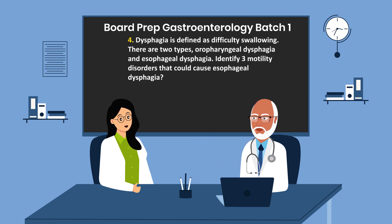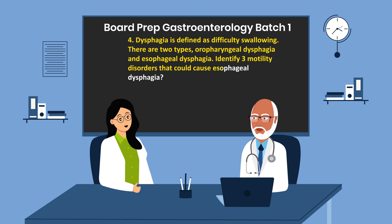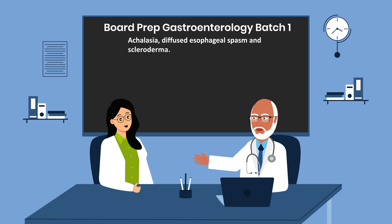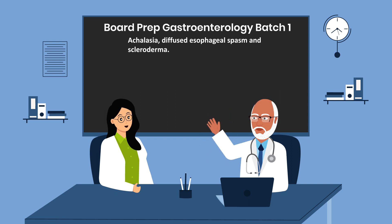Question 4. Identify three motility disorders that could cause esophageal dysphagia. The answer is achalasia, diffuse esophageal spasm, and scleroderma.